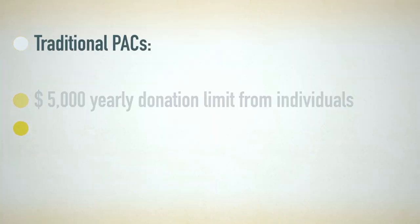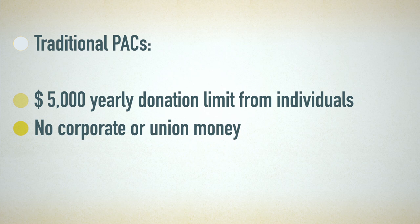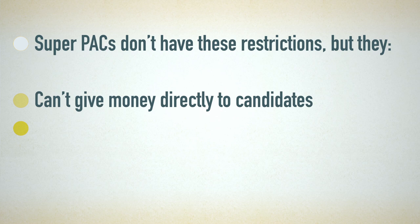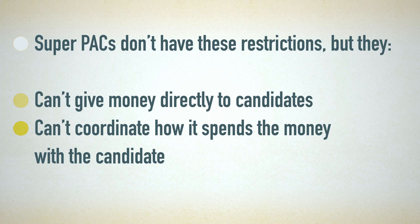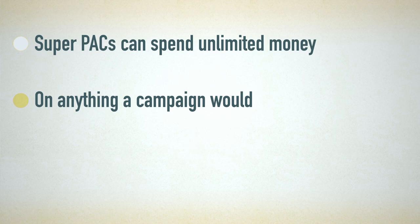Traditional PACs, which still exist, can only accept $5,000 from a person each year, which is then commonly given directly to the candidate. They are also prohibited from accepting money from a corporation or a union's treasury. A Super PAC is free from these restrictions under two conditions: first, they must not give money directly to a candidate or to a PAC that contributes directly to candidates, and second, a Super PAC can't coordinate how it spends its money with the candidate. But a Super PAC can spend unlimited money on things like TV ads, phone banks, door-to-door canvassers, and other activities.